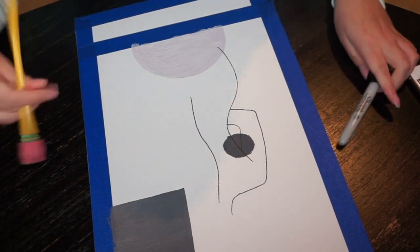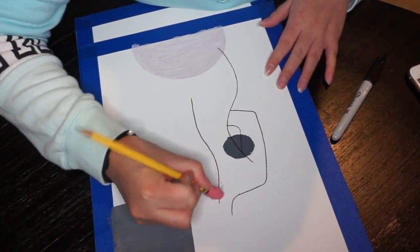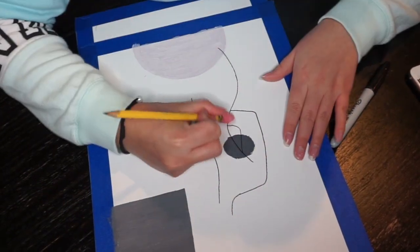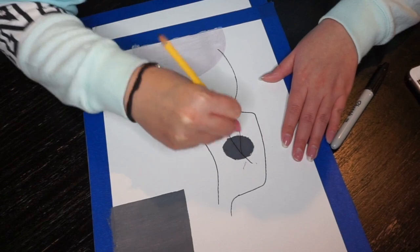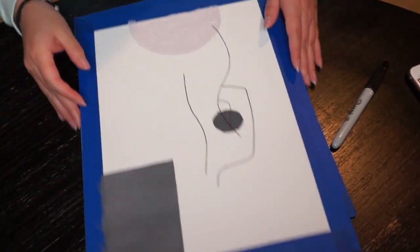So once I am done outlining it with my Sharpie, I am just going in with my eraser to erase any visible pencil marks. This is just an extra step. It wasn't that noticeable, but I just went in and tried to erase as much as I could.